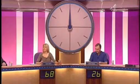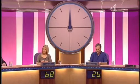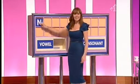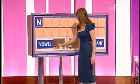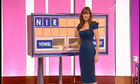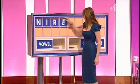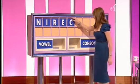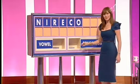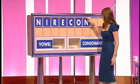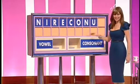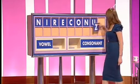We're going to play the game. We move on and Gail's going to put some more letters up there. A consonant, please, Carol. N. A vowel. And I. Consonant. R. Vowel. E. Consonant. C. Vowel. O. Consonant. N. Vowel. That is U. And a consonant, please. And Z.